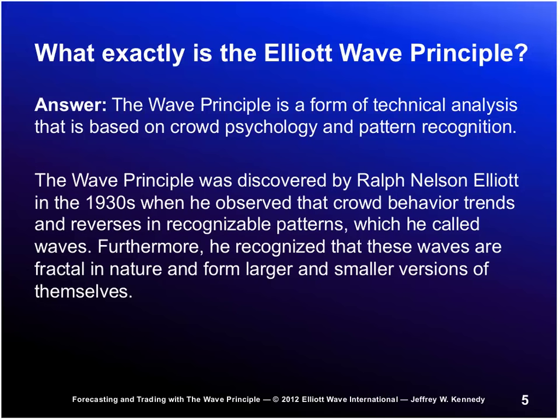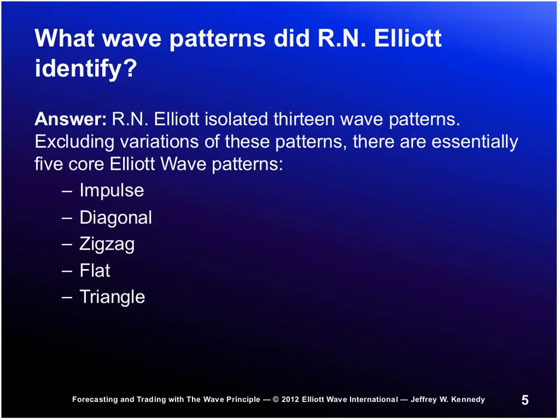A good place to start would be to explain what exactly is the Elliott Wave Principle. The Wave Principle is a form of technical analysis that is based on crowd psychology and pattern recognition. It was discovered by Ralph Nelson Elliott in the 1930s when he observed that crowd behavior trends and reverses in recognizable patterns, which he called waves. He also understood the fractal nature of those patterns. In the 1970s, the Wave Principle really became popularized by A.J. Frost and Robert Prechter.